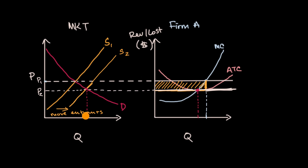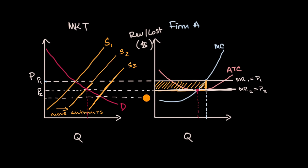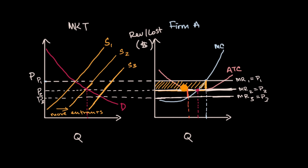What about the other situation — if too many people joined into this market and we went to supply curve three? That would define a lower price P3 and marginal revenue curve three. If too many entrants joined the market, firm A now has a more difficult scenario. They would produce at the quantity where MR equals MC, but at that quantity their average total cost is higher than the revenue they're getting, so they're running at an economic loss in the short run.